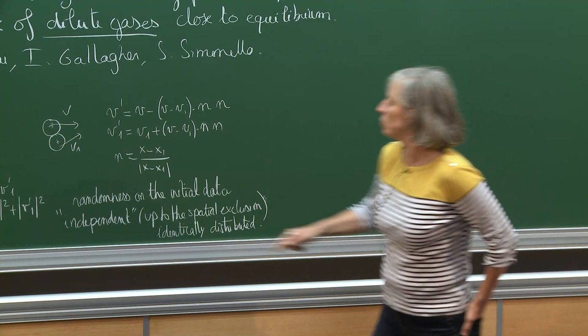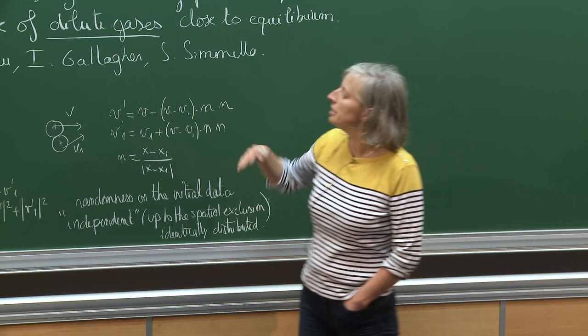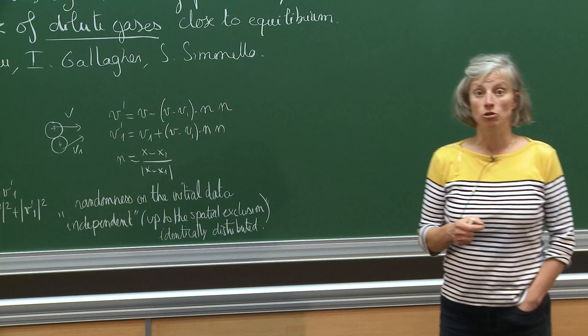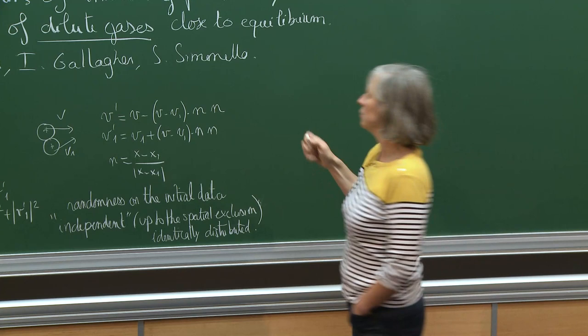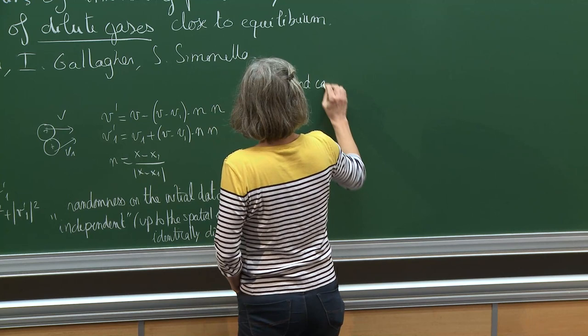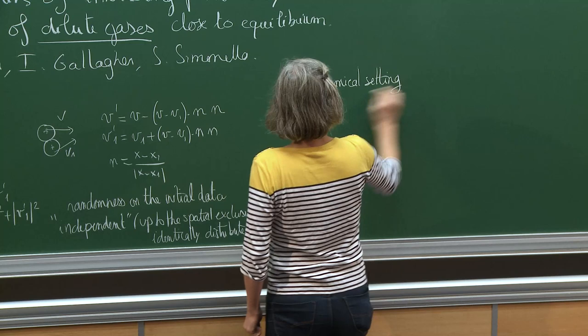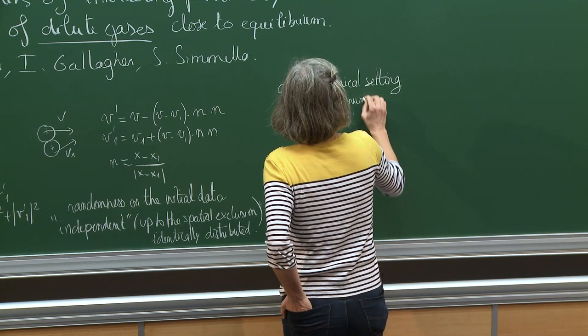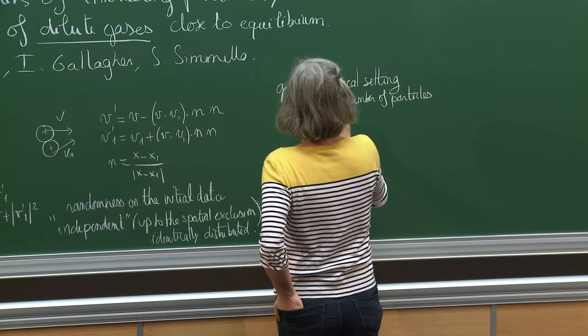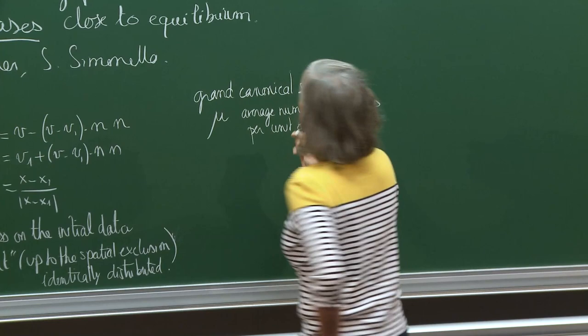Does this mean you start with the Gibbs distribution? In general there is no reason to start with the Gibbs measure — you can take any distribution for the typical particle. But here, since I want to be at equilibrium, I will look at the Gibbs measure. There is also randomness in the number of particles: what I know is not the exact number but just the average number of particles — something like a quasi-Poisson law, which is called the grand canonical setting. Here μ is the average number of particles per unit of volume.